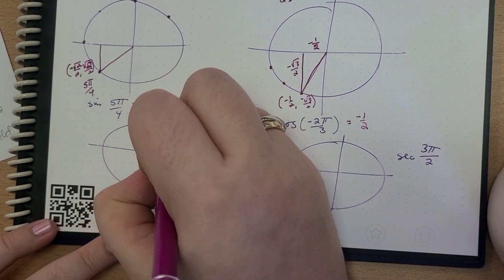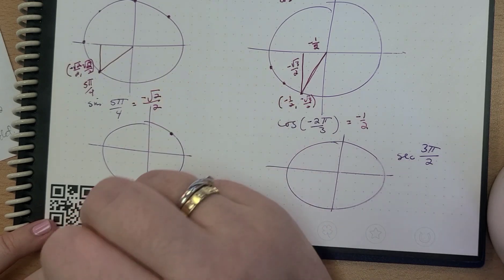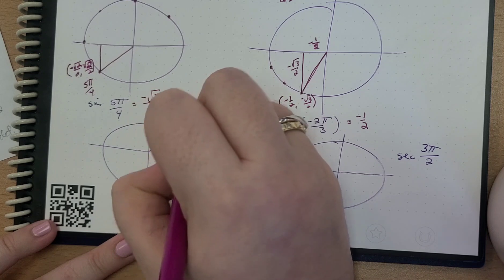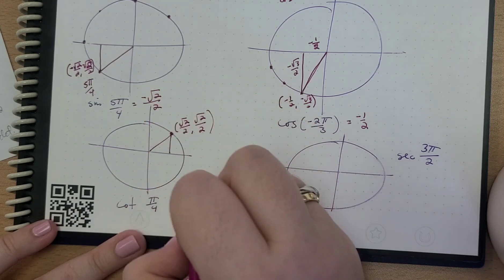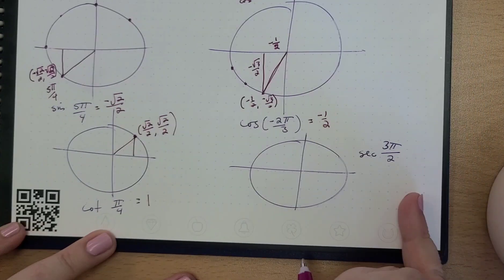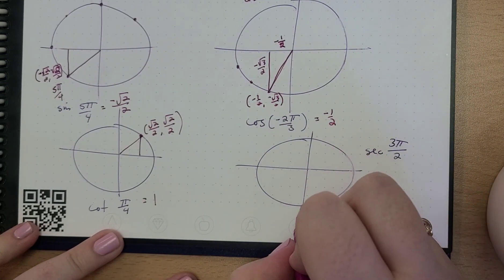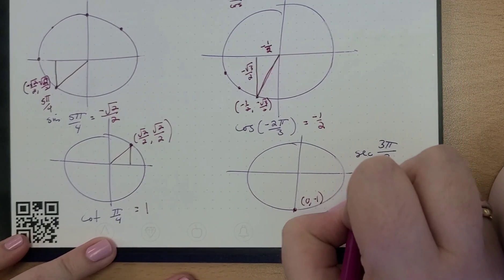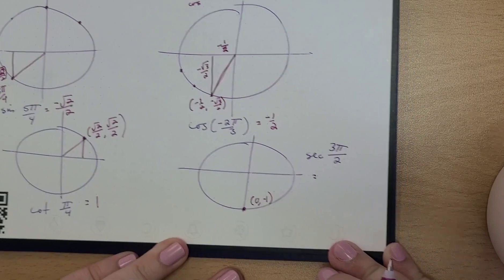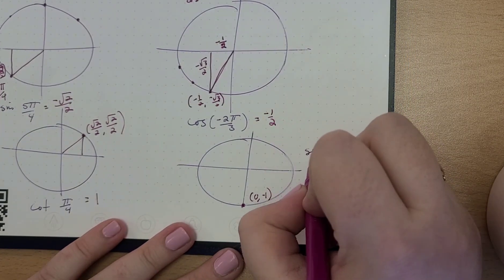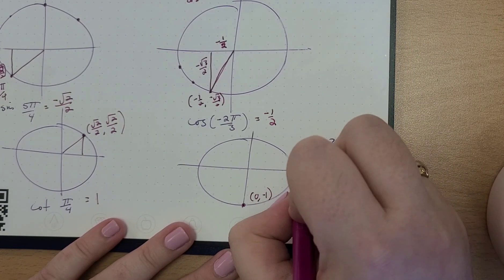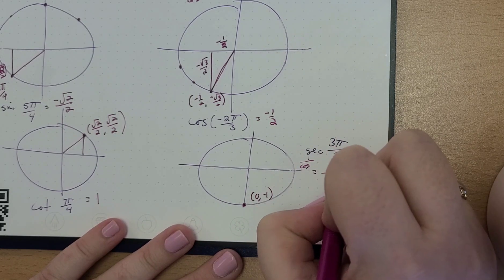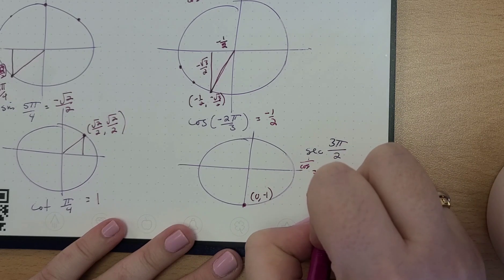Here we have cotangent of π/4. π/4 is right there — this is (√2/2, √2/2). And we know if we put those on top of each other, we're just going to have one. Then secant of 3π/2 — well, 3π/2 is right here. So this is the point (0, −1), and secant is one over cosine. Well, the cosine is zero, so this is one over zero, which can't happen — so this is undefined.